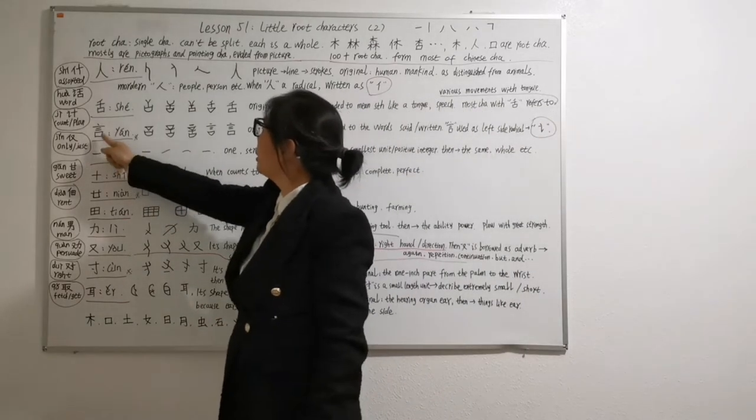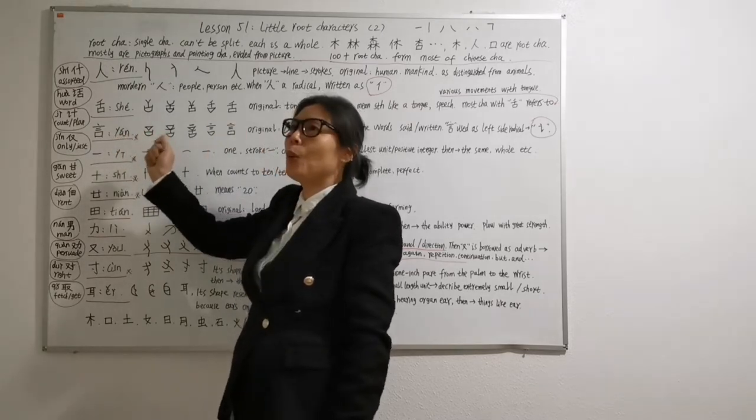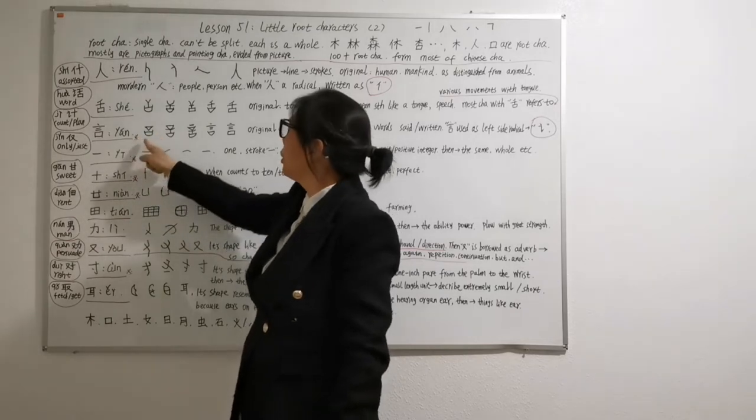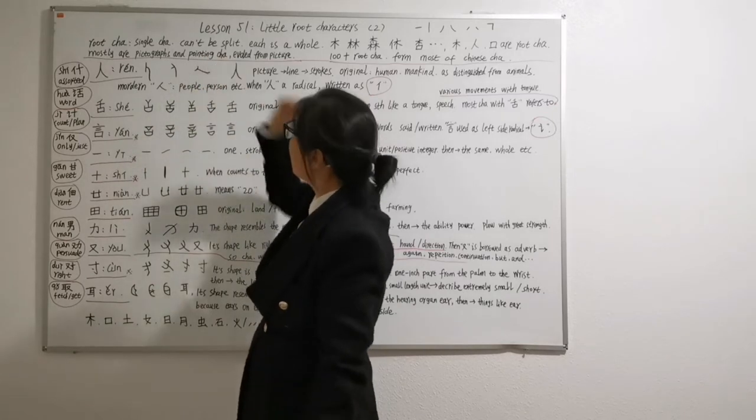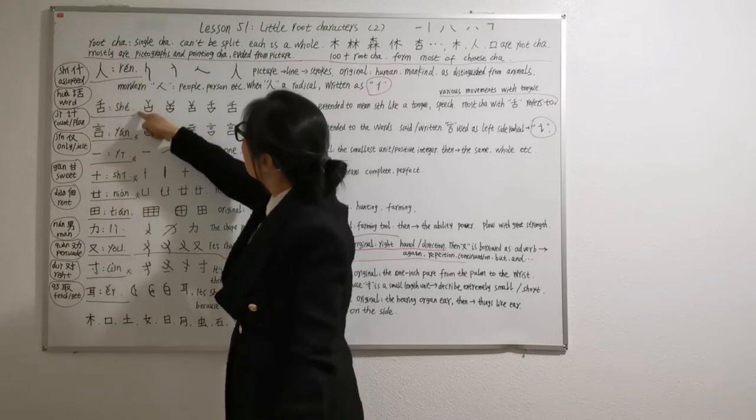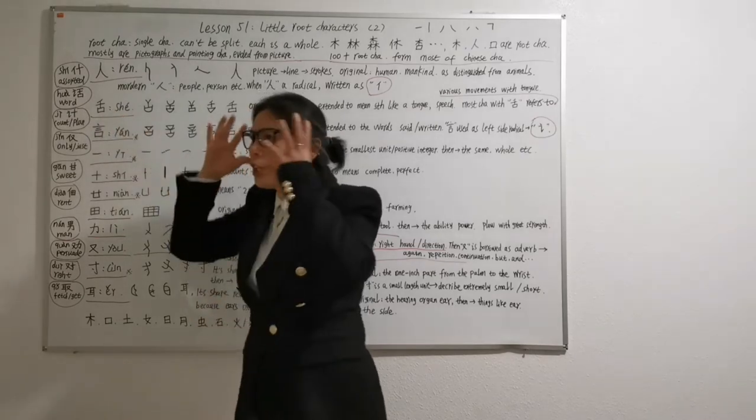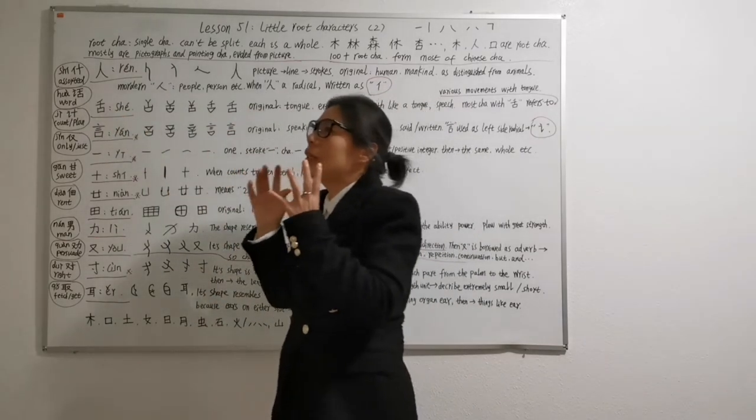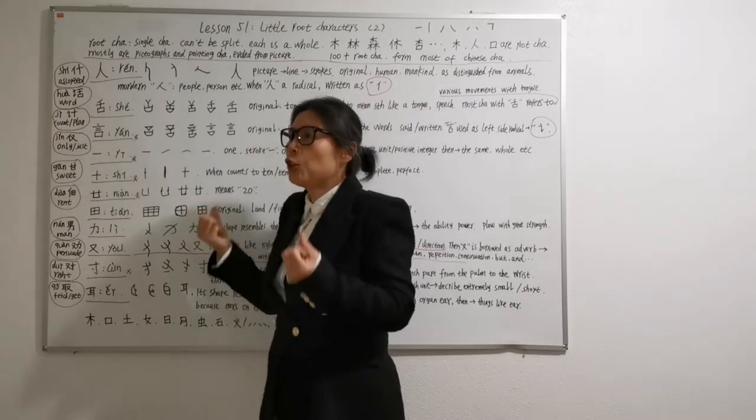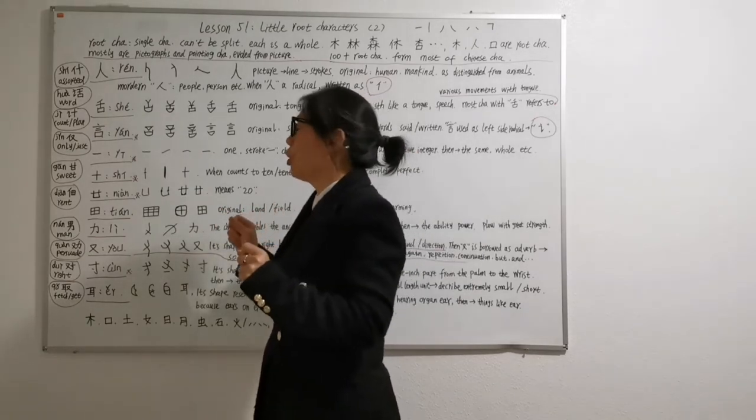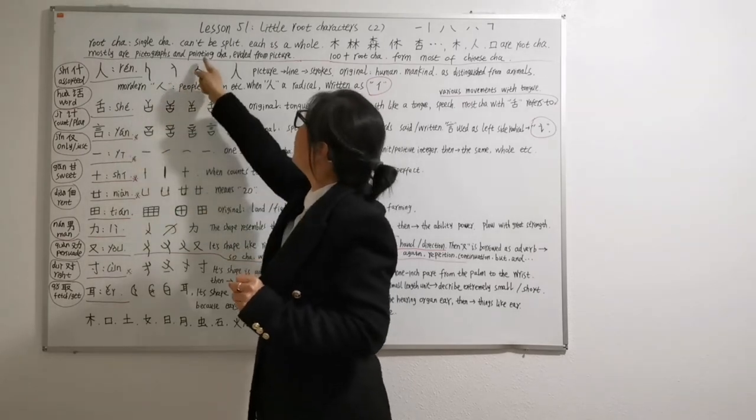The third, this one. Pronunciation is yi an yan. Yan is words, speech. Look, here, this meaning pointing character. Without this they are pictographs, because ren and she, person and your tongue, they have imagines. This yan, you talk, it has no imagine. It indicates you are talking or your speech. So, it's pointing characters.